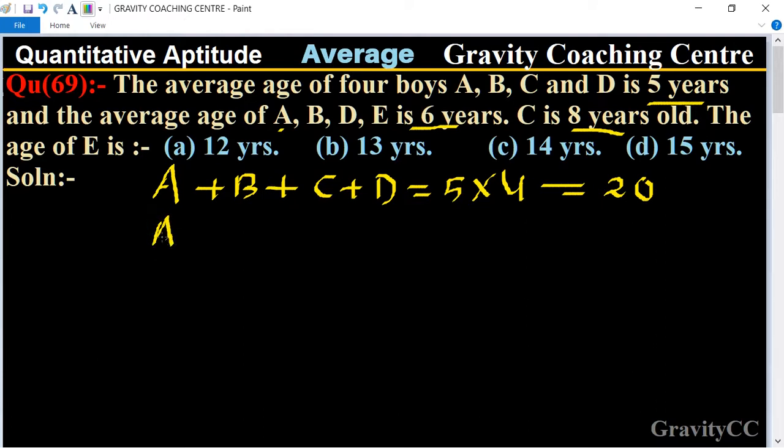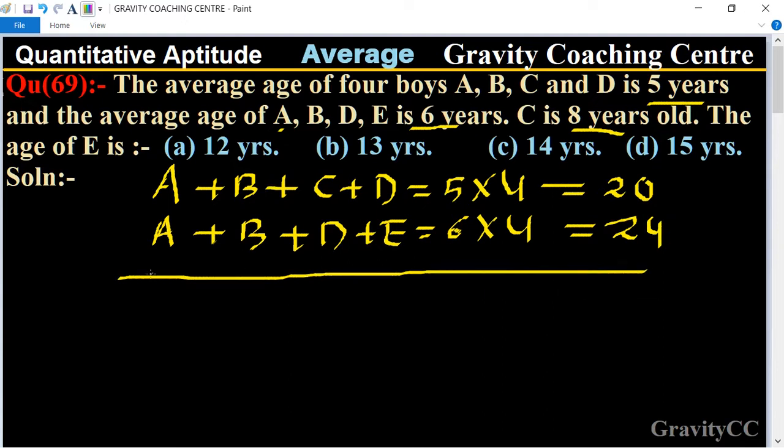And the average age of A, B, D and E, so the sum of age of A plus B plus D plus E equal to their average age is six years, so six into four equal to twenty-four. So now we subtract them, minus minus minus minus and minus.